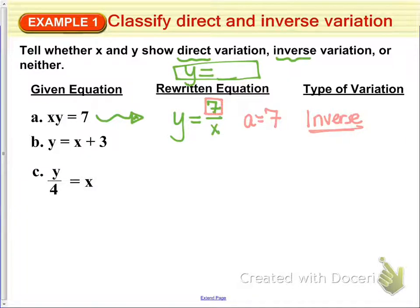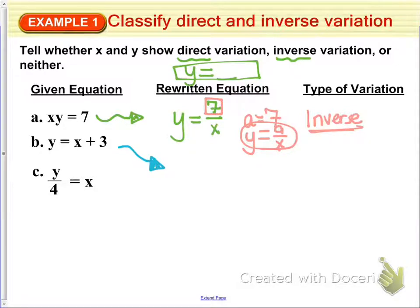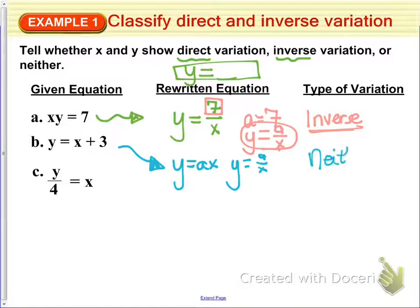That's because it's in the form y equals a over x. Part B: we've got y equals x plus 3. This one is already in y equals form. Is it in the form y equals ax or a divided by x? The answer is neither. Because of that plus 3 — because we are adding 3 — it is neither direct nor inverse variation.